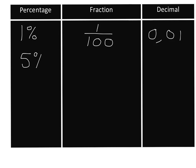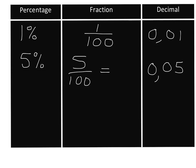Five percent will just be five over a hundred, and as a decimal that'll be 0,05. Just look at the fraction though — five over a hundred is not in its simplest form, so we can simplify it. We divide top and bottom by five: the top gives us one, the bottom gives us twenty. So five percent equals five over a hundred, which equals one over twenty, which equals 0,05.